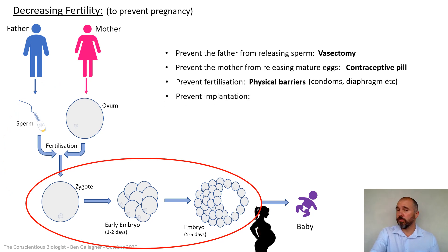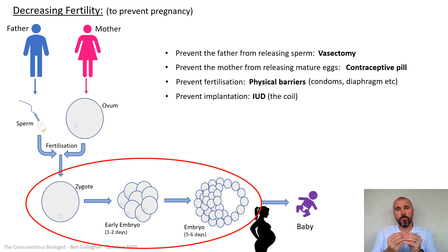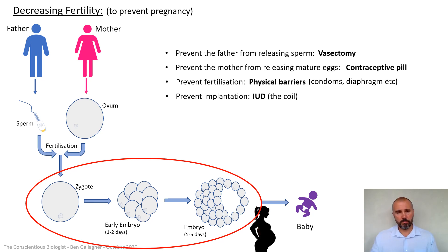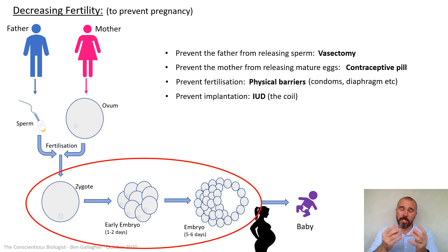Looking at the next stage — trying to prevent implantation — there are devices women can have fitted called an intrauterine device or the coil. This little device is fitted up inside the uterus through the cervix, and it releases copper into the uterus. Copper prevents an egg from being able to implant into the uterus. It's a very effective form of contraception that can be put in or taken out at any time by a doctor. Fertilization could still happen and the egg may start to multiply into an early embryo, but if it can't implant it won't halt the menstrual cycle, and when the endometrium breaks down that fertilized egg will pass out with everything else.